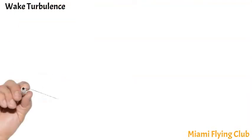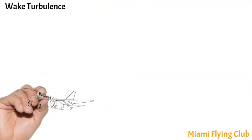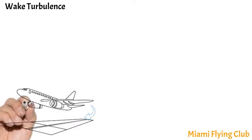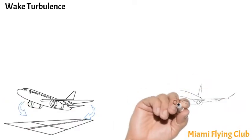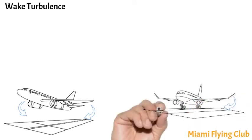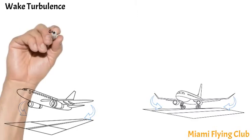Wake turbulence: all aircraft leave behind two types of wake turbulence - prop or jet blast and wing tip vortices. Prop or jet blast could be hazardous to light aircraft on the ground behind large aircraft. Wing tip vortices are a byproduct of lift. The maximum vortex strength occurs when the aircraft is heavy, clean, and slow.